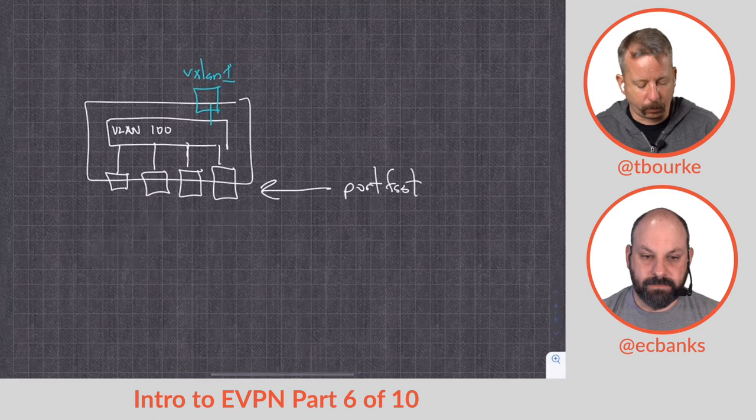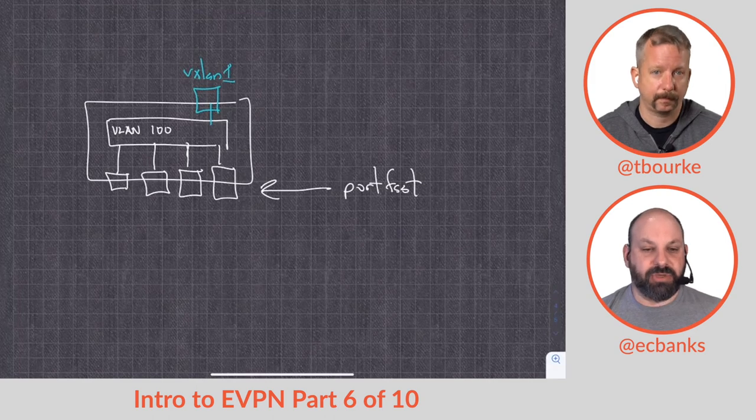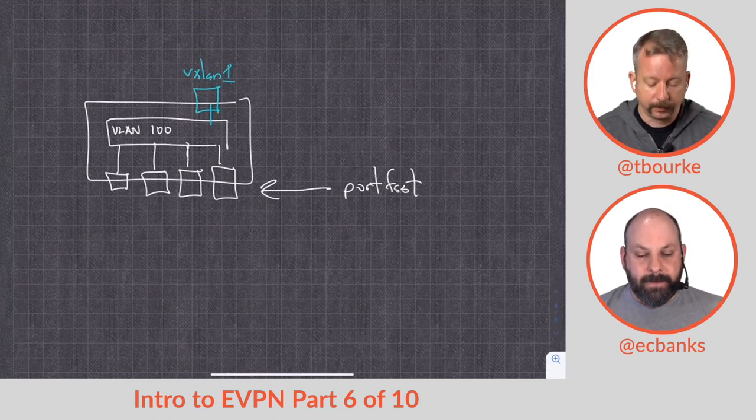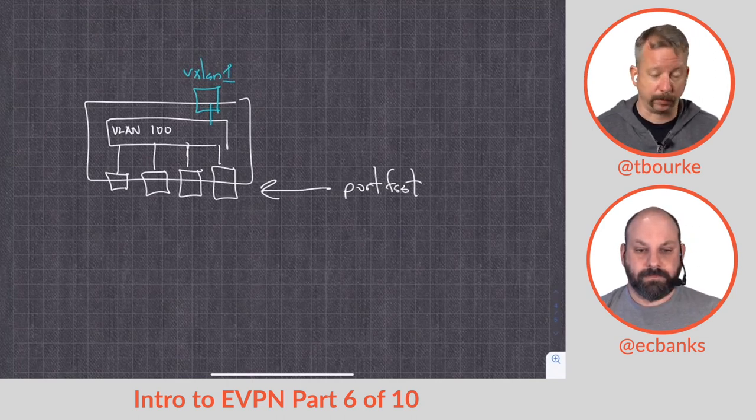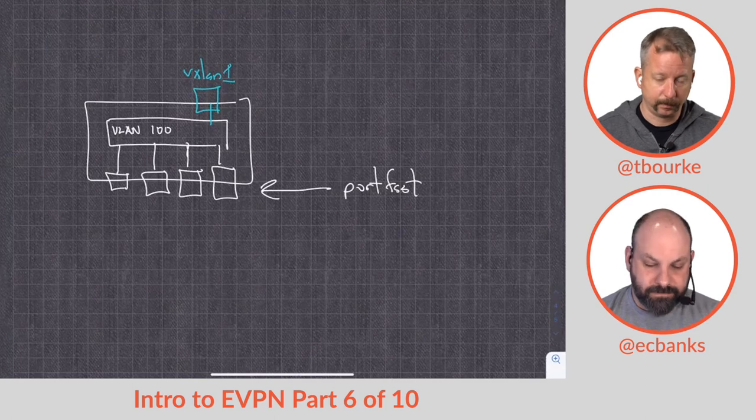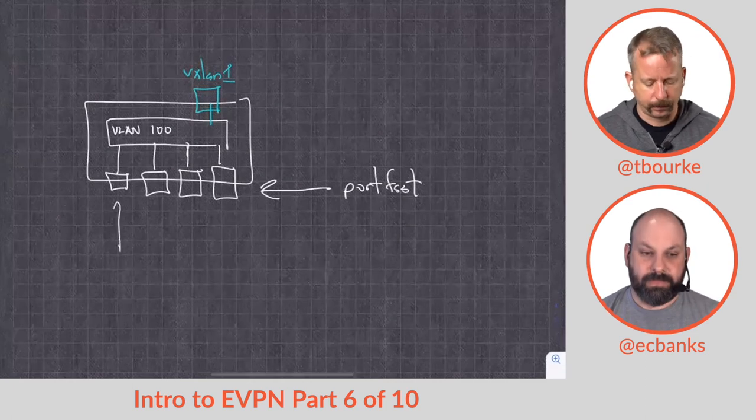Port fast is kind of a promise—a promise I'm not going to plug another switch into this port, I'm just going to plug a host. Those should all be host-facing ports, right? Yeah. So usually in that case, because they're configured for port fast, we're not going to be sending BPDUs out of them, but we're going to have BPDU guard, I think it's guard.